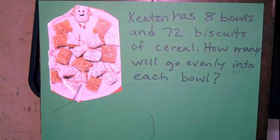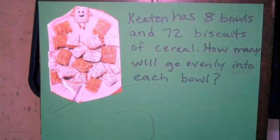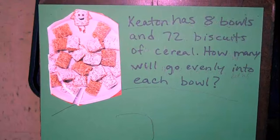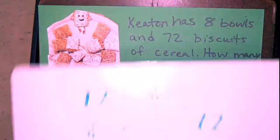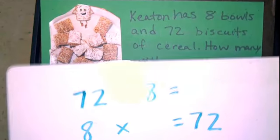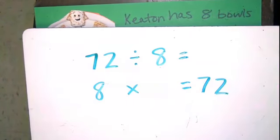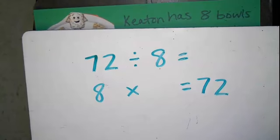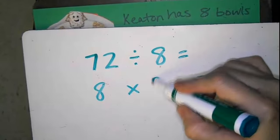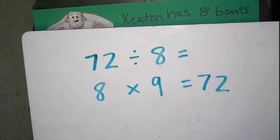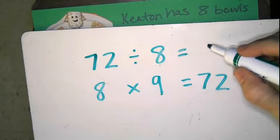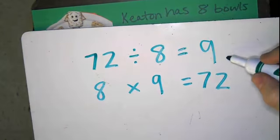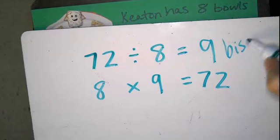All right, this sounds like a division problem to me. I know my fact families. I know that eight times nine is 72, so that means that 72 divided by eight is nine. There should be nine biscuits in each bowl.